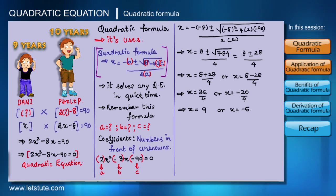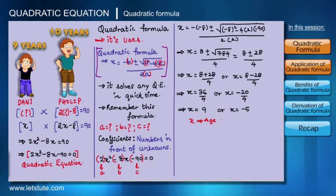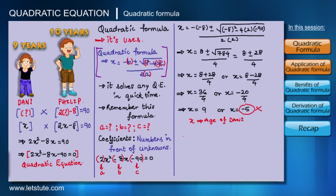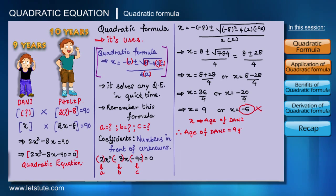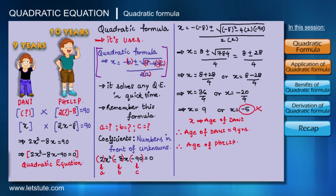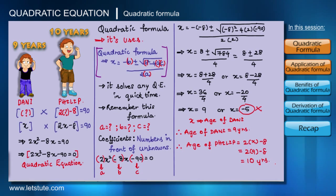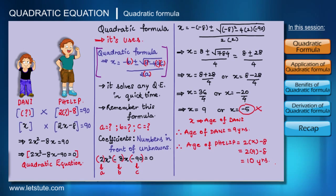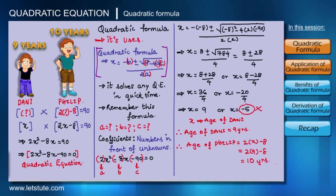After putting these values of a, b, and c into the quadratic formula, we get two values for x: 9 and minus 5. Since x represents Danny's age, it cannot be negative, so we reject minus 5 and take x equals 9. Danny's age is 9 years. Using this value of x in the expression for Philip's age gives Philip's age as 10 years. This is how I used the quadratic formula to find their exact ages.